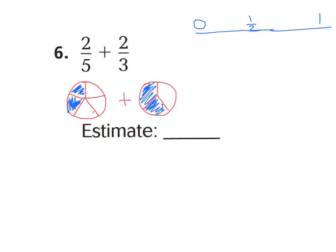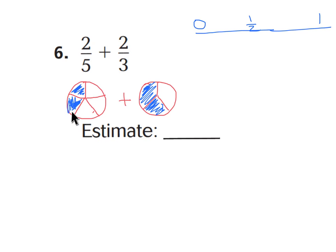Let's look at two-fifths. Remember, with a fraction, if it doesn't simplify to a half, you can visualize just an imaginary line coming straight down to see: is two-fifths closer to one-half, is it closer to zero, or is it closer to one-whole? I can automatically see this is closest to one-half, because this is all that I have left in this section. So I'm going to say two-fifths is closest to one-half.